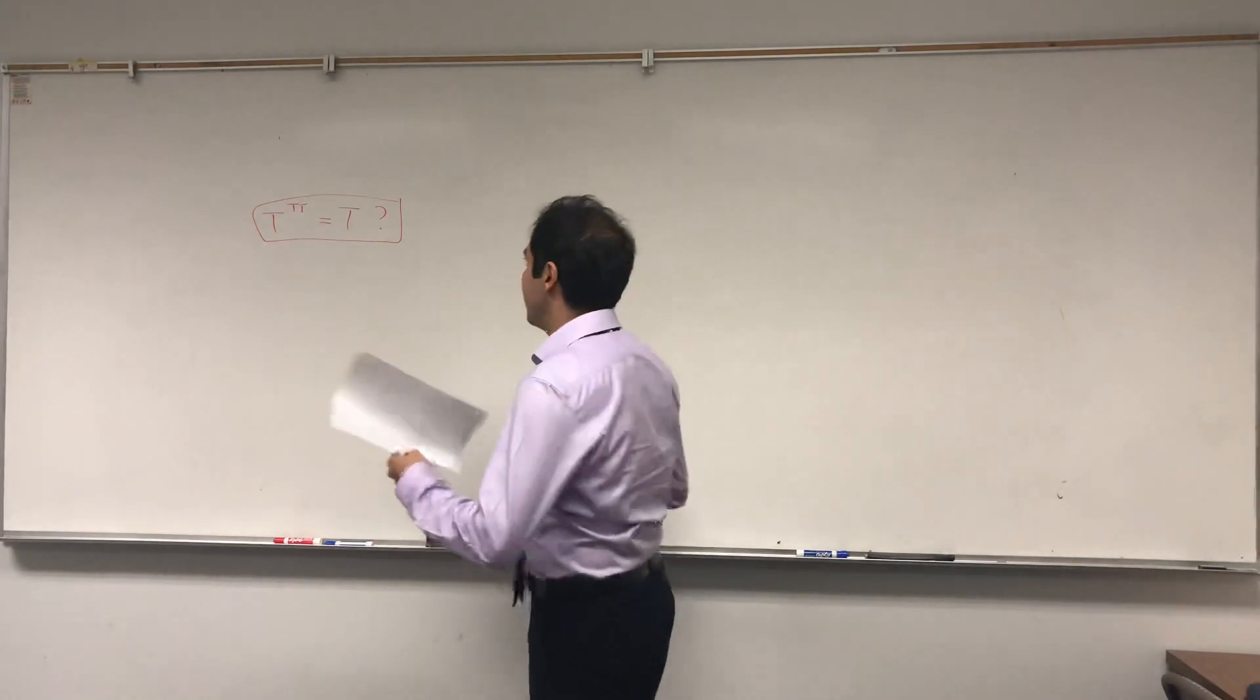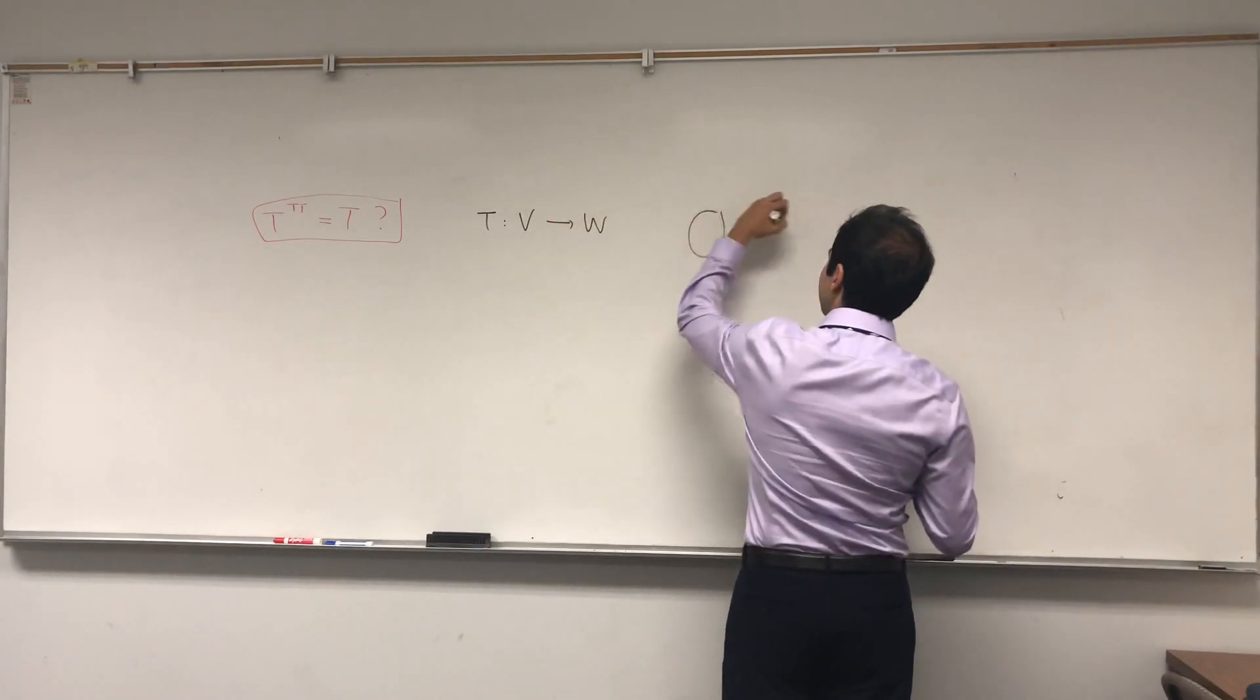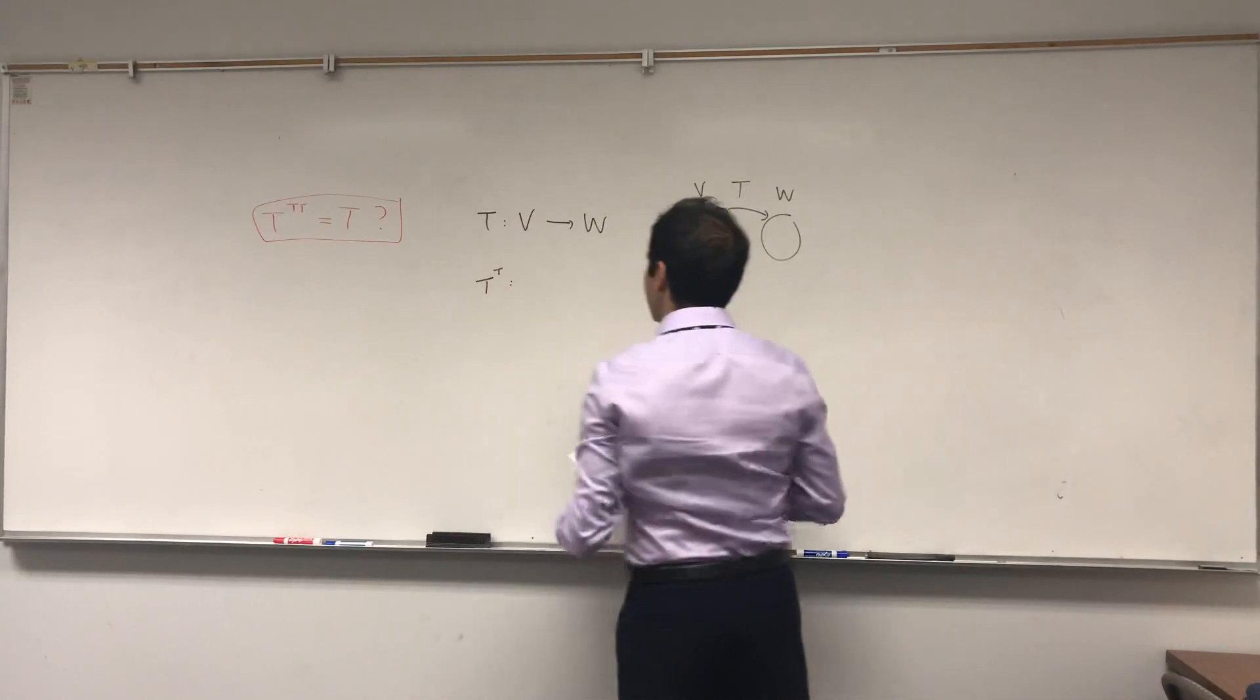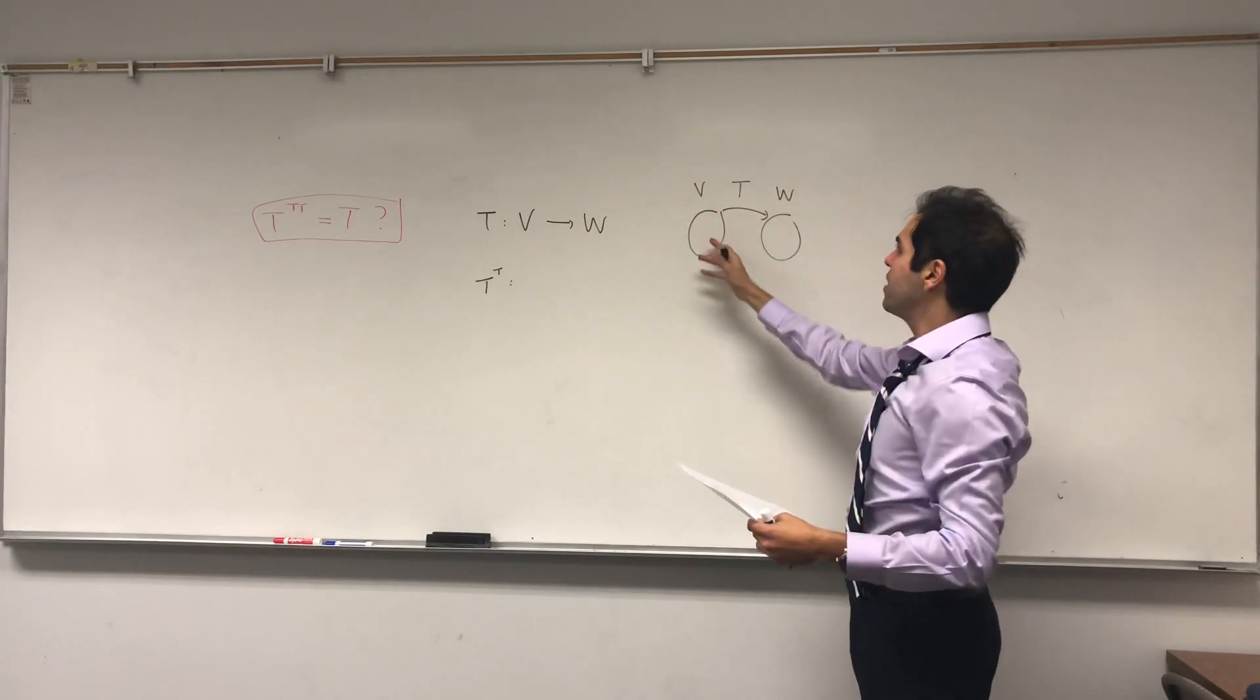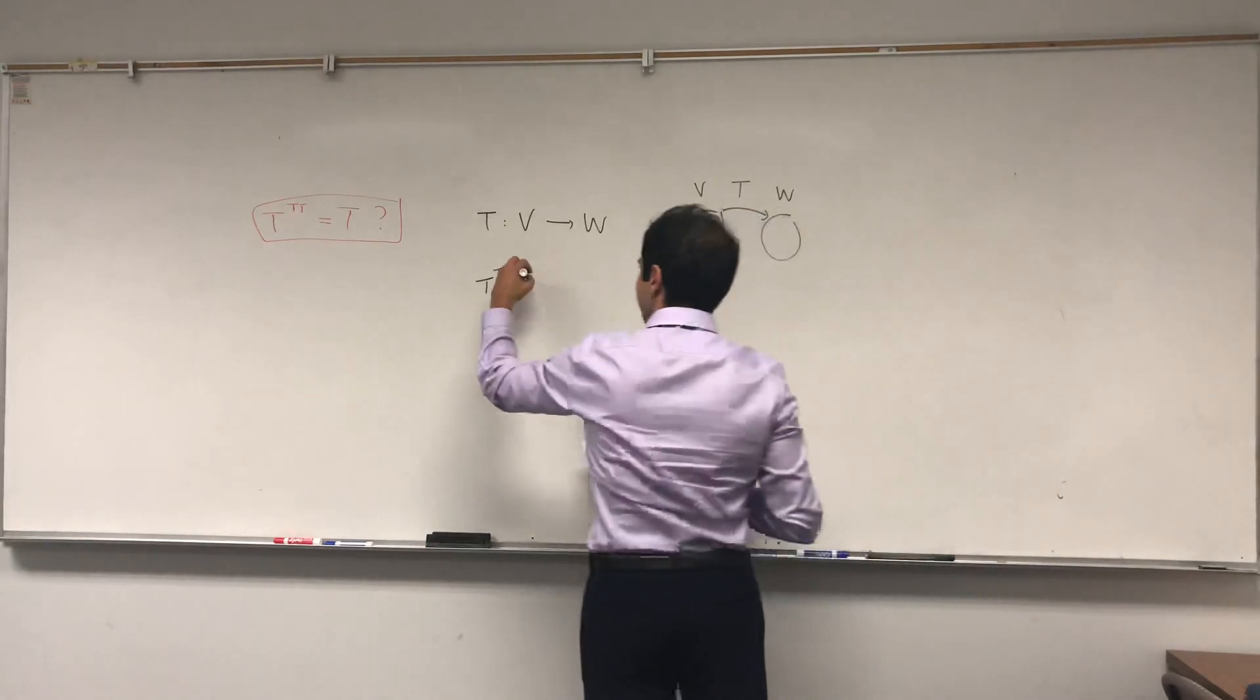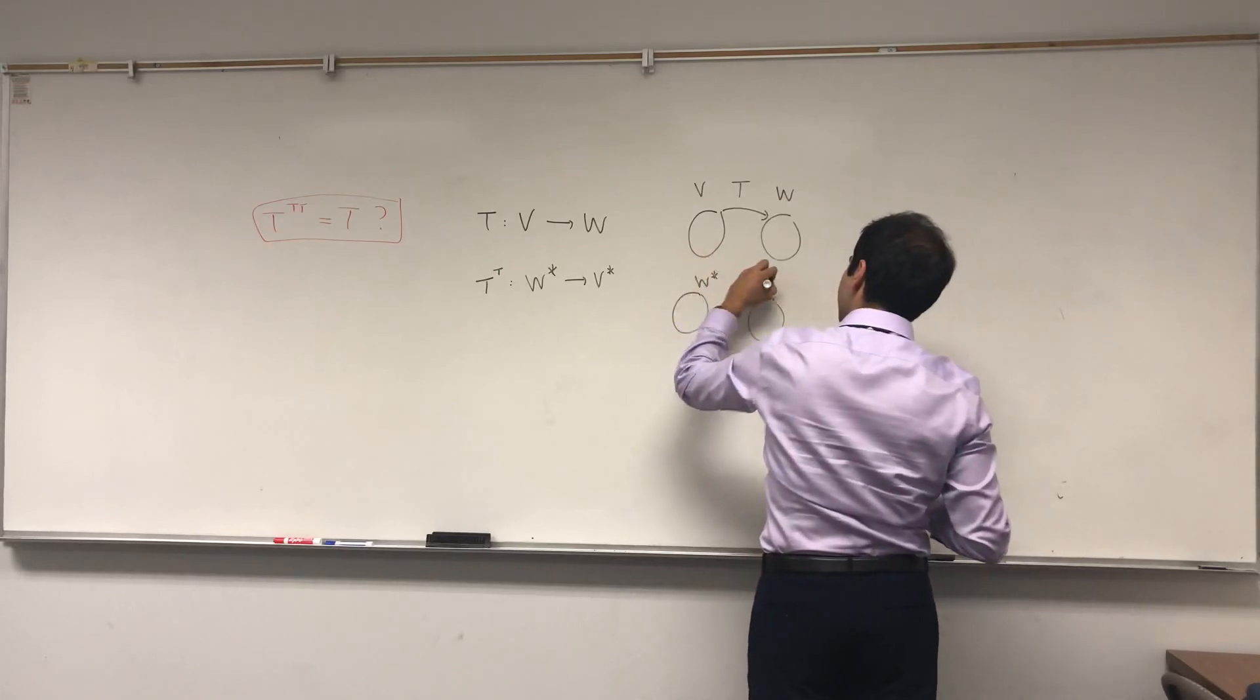Just to remind you of some notation, suppose we have T from V to W, a linear transformation. Then we can define T transpose, where technically we can't flip W and V because T isn't invertible necessarily. But what we can do is act with dual spaces. So T star goes from W star to V star.